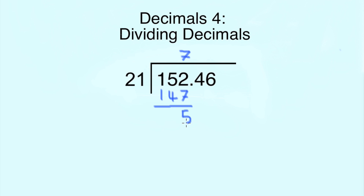We draw a line under this, then take 147 from 152, which gives us 5. Now we drag the 4 down, giving us 54.